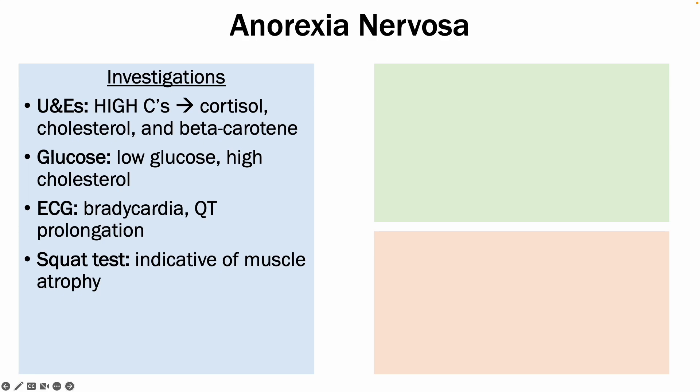You can also perform something called a squat test, where you ask the patient to sit on the floor and squat, then try to get up without using their hands. If they're not able to do it, the squat test is positive and indicates muscle atrophy.